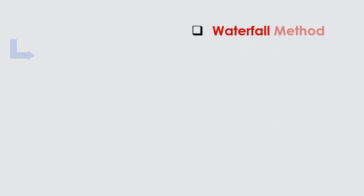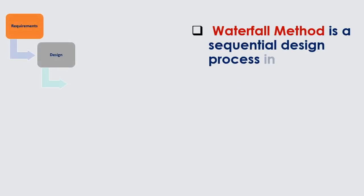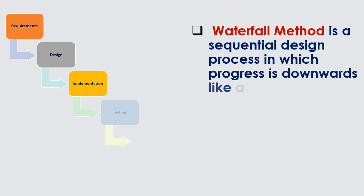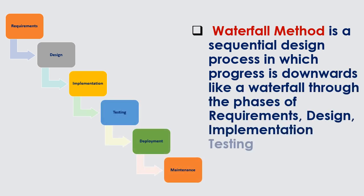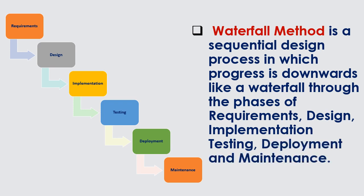Waterfall Method is a sequential design process in which progress is downwards like a waterfall through the phases of requirements, design, implementation, testing, deployment, and maintenance.